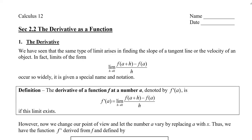In this video, we're going to find the derivative as a function — meaning we're going to graph the derivative and find it. We've already seen that the same type of limit arises in finding the slope of a tangent line or the velocity. We get to use the same formula. The derivative of a function f at a number a is denoted f prime of a, and it's this limit as h approaches 0. We assume this limit exists, and this is called the definition of the derivative.